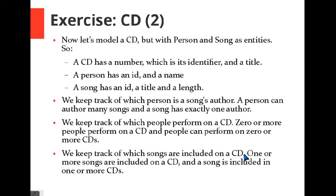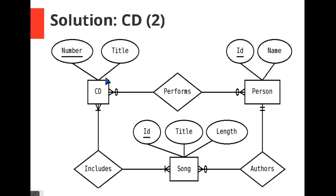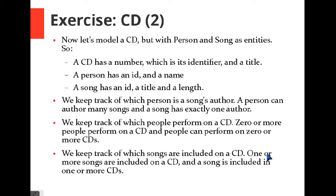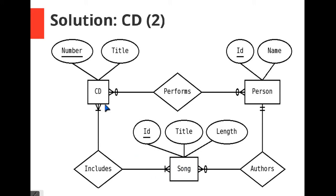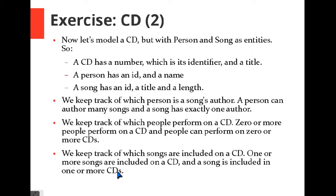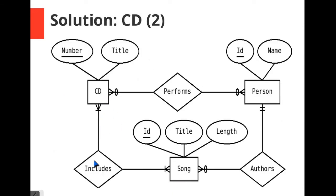We keep track of which songs are included on a CD, so there is a relationship called 'includes' between song and CD. One or more songs are included on a CD — so one CD has one or more songs, which is a 'one or many' cardinality. And a song is included in one or more CDs — so one song has one or more CDs. This is also a many-to-many relationship.